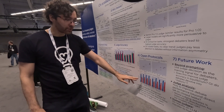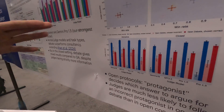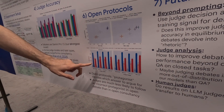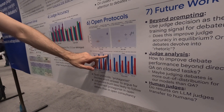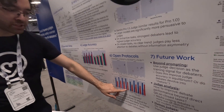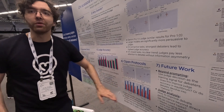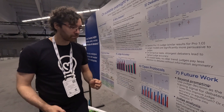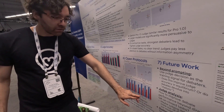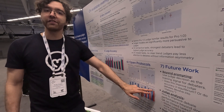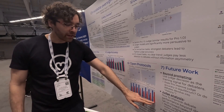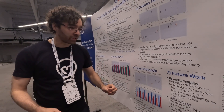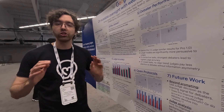Looking at the open protocol results: the dark bars show when the consultant or first debater decides to argue for the true position. In consultancy, when the consultant argues for the true position, judge accuracy is very high — but when the consultant argues for the false position, judge accuracy is very low. The judge is basically just going along with whatever the consultant says. In debate, by contrast, when the first debater argues for the true position, the judge still gets fairly good accuracy. But even when the first debater argues for the false position, because the other debater is arguing for the true position, the judge achieves much higher accuracy and is much less likely to be swayed.